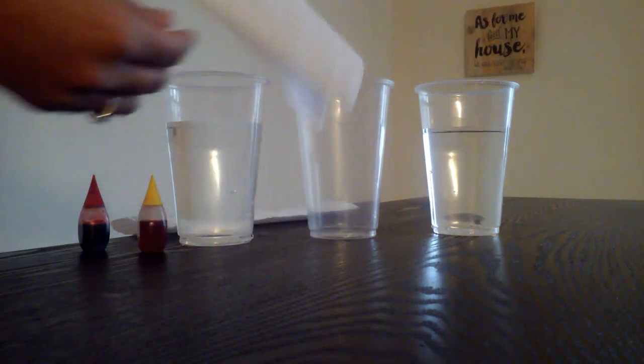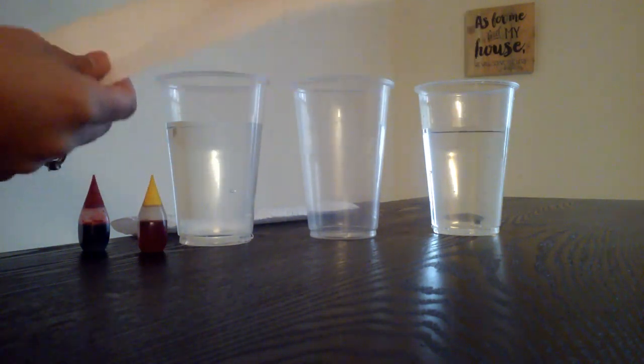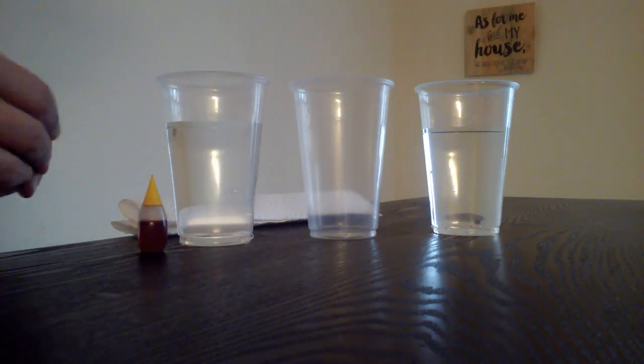Two pieces of paper towel. If you have the full sheet you can rip them in half and then fold it in half, and then two things of food color.